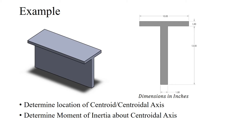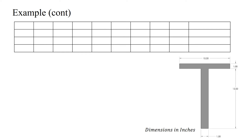For our example problem, we'll look at a T-beam and find the location of its centroid as well as determine the moment of inertia about its centroidal axis. We'll use a table — which is especially handy in an Excel spreadsheet — and divide our section into two rectangular segments: segment one at the bottom and segment two at the top.